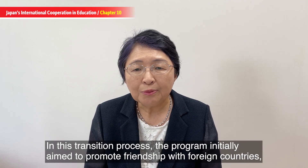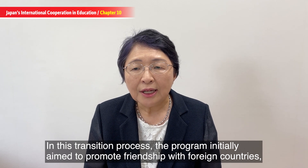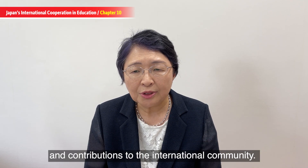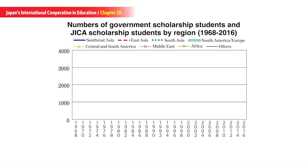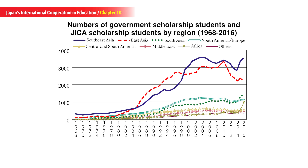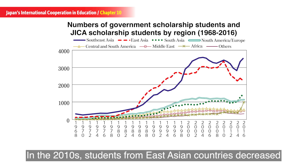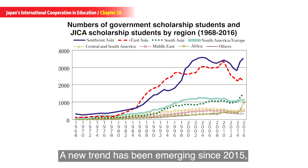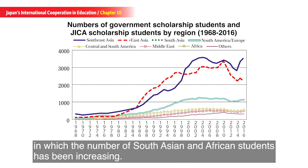In this transition process, the program initially aimed to promote friendship with neighboring countries, centering on ASEAN countries, against the backdrop of Japan's post-war reconstruction and contribution to the international community. After the 1980s, the objective shifted to focus on increasing the number of international students. In the 2010s, students from East Asian countries decreased and accounted for only 20% of all ODA-funded students, declining from a peak of 40%. A new trend has been emerging since 2015, in which the number of South Asian and African students has been increasing.